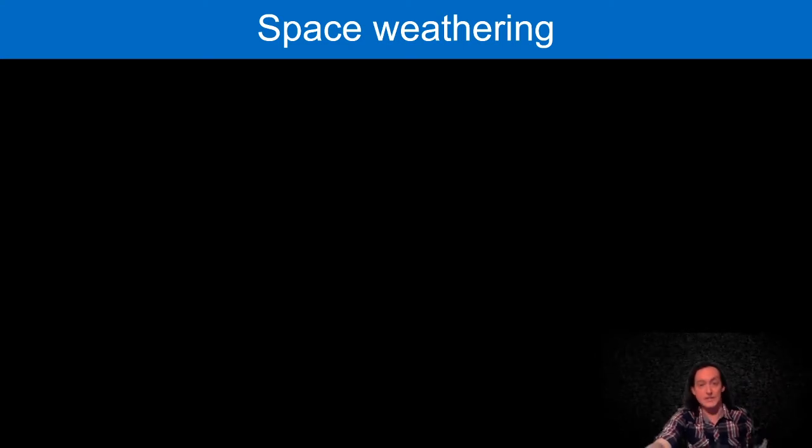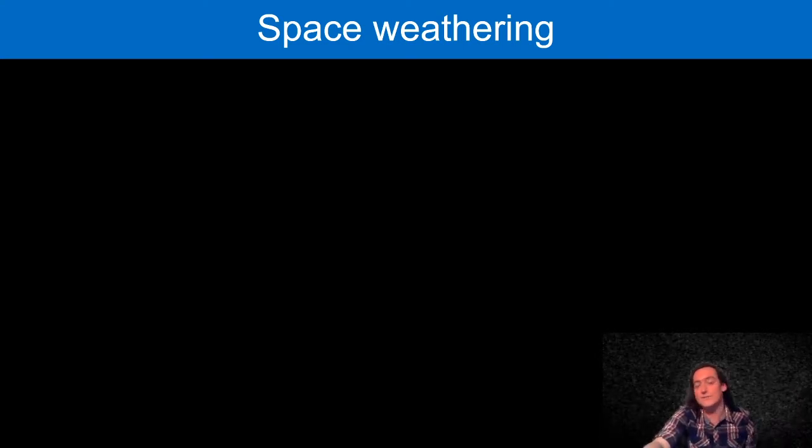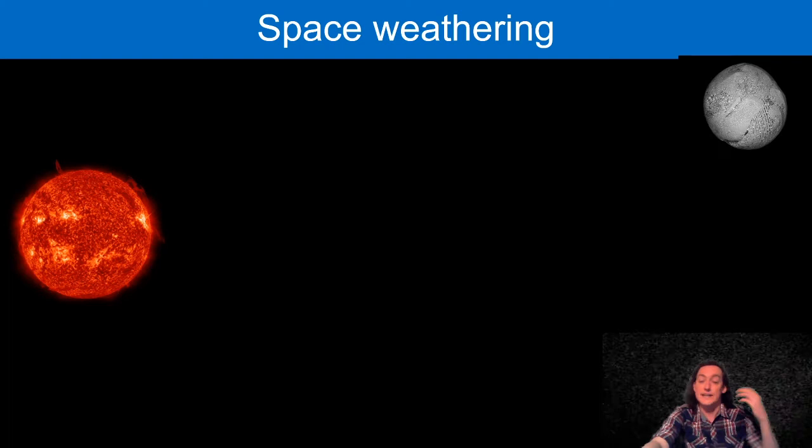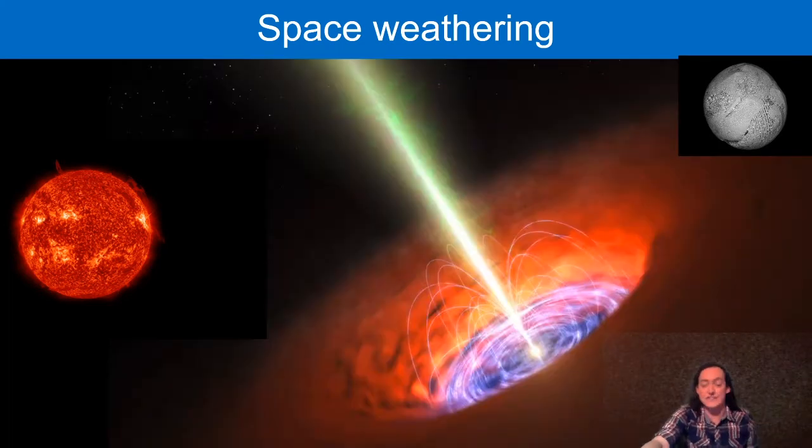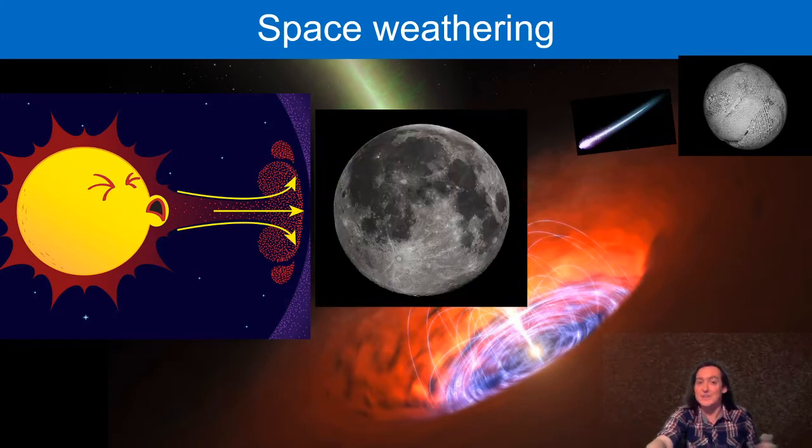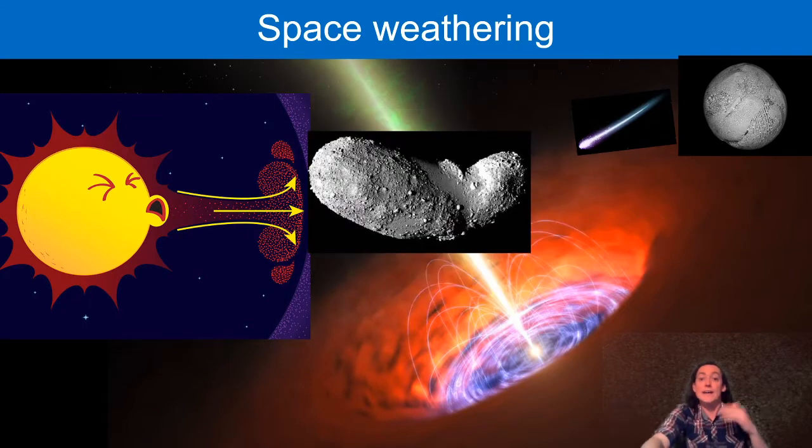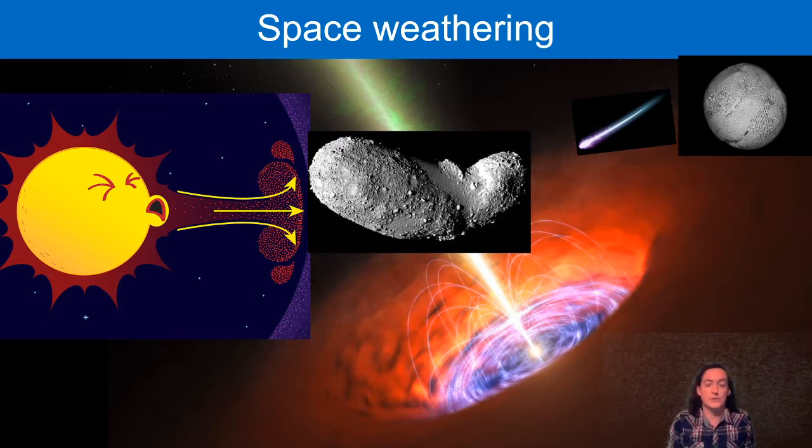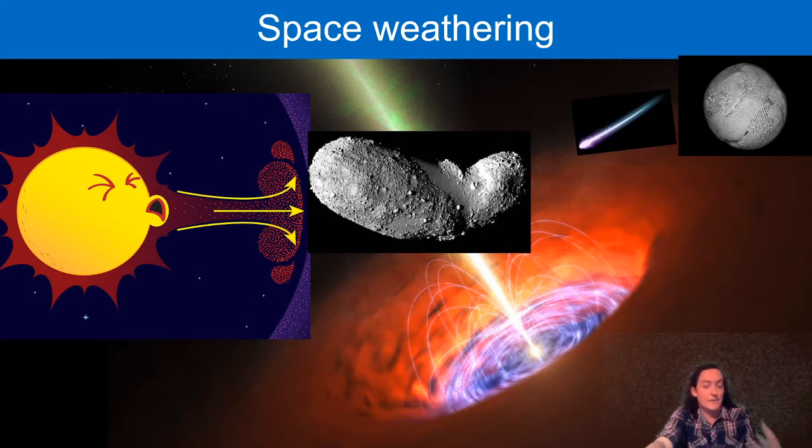That's where a process called space weathering comes in. Space weathering is a process that affects every surface exposed to the vacuum of space. So that includes the solar wind, that stream of hydrogen ions, as well as ultraviolet rays. It includes micrometeorite impacts, as well as galactic cosmic rays from the death of giant stars. These affect every surface exposed to the vacuum of space. So that's things like comets, Mercury, the Moon, Billionaire's car apparently, and the asteroid Itokawa, or indeed any asteroid. I'm going to focus on the asteroid Itokawa because this was the subject of a sample return mission.